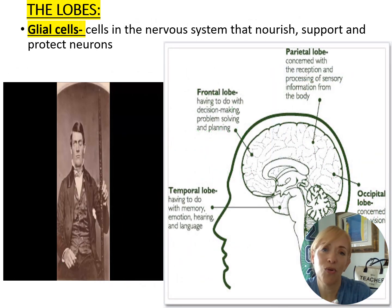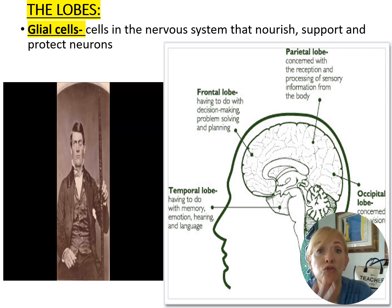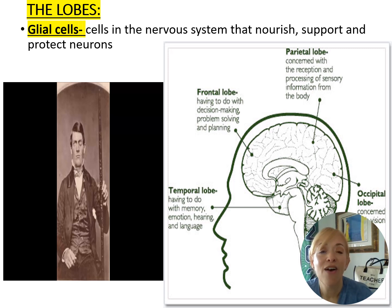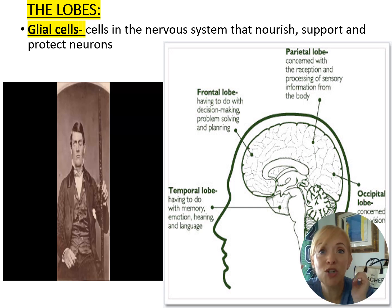Know the general structures of the lobes: the frontal lobe handles critical thinking and planning; the occipital lobe is associated with vision; the parietal lobe processes sensation information; and the temporal lobe — located around your ears — is associated with hearing. Think 'tempo' — it's what you hear with.